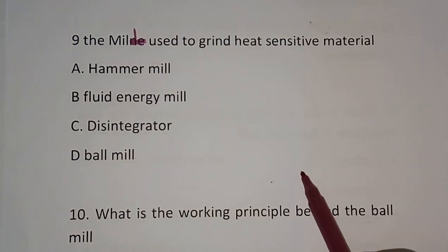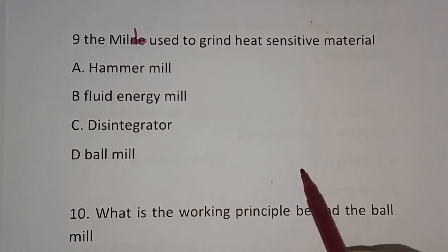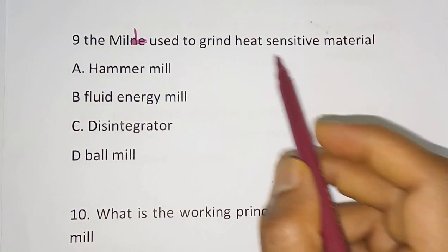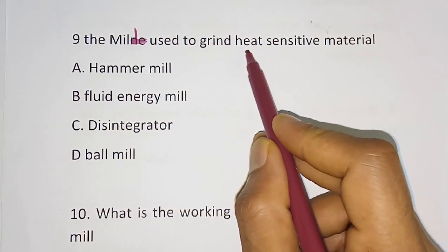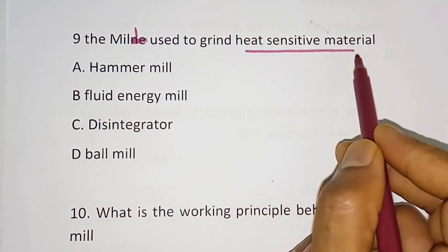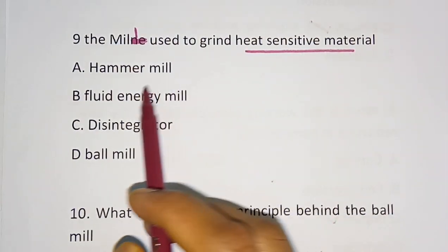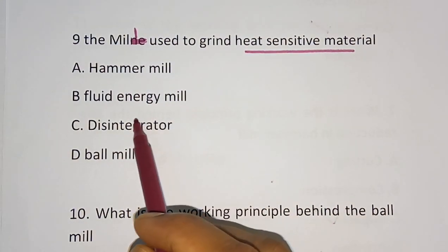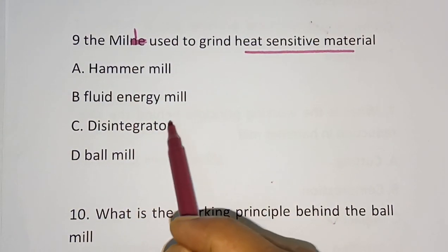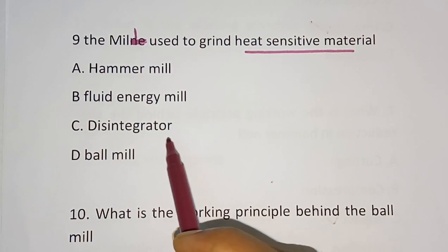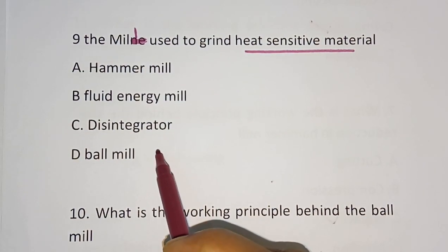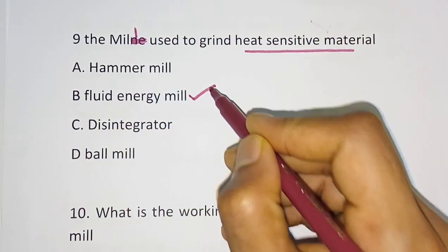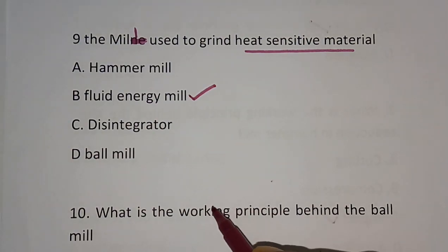Question number 9: The mill used to grind heat-sensitive (thermolabile) material. Options are: hammer mill, fluid energy mill, disintegrator, ball mill. The correct answer is fluid energy mill.